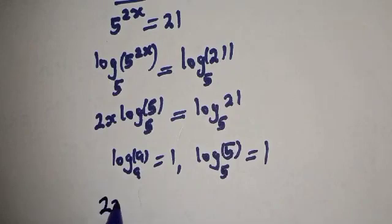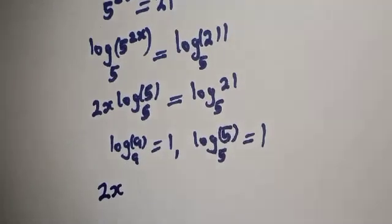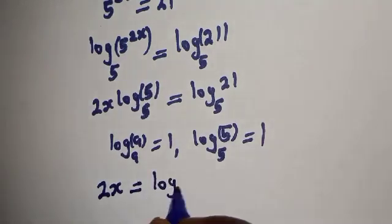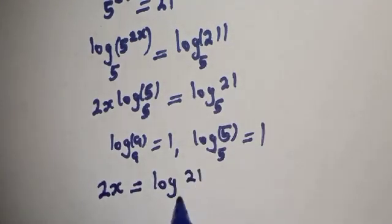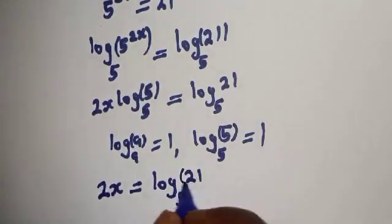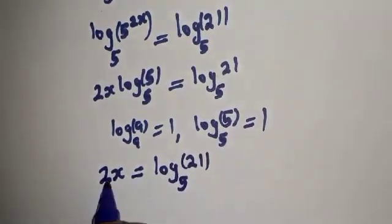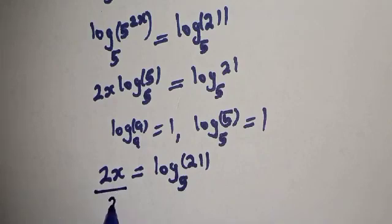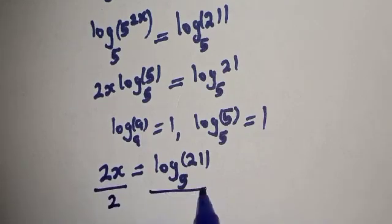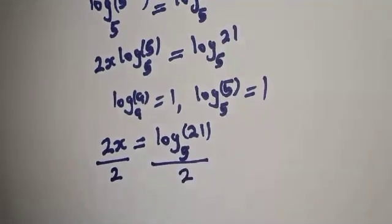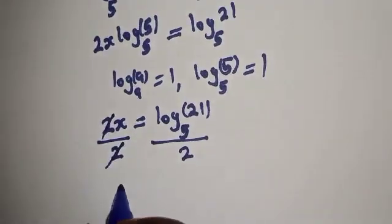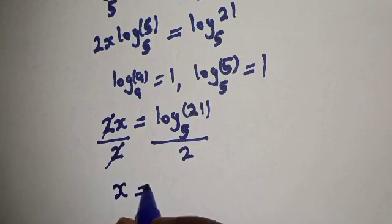And 2s is equal to log base 5 of 21. We are looking for the value of s. Let's divide both sides by 2. Divided by 2, divided by 2. Now this will cancel.